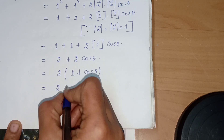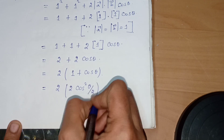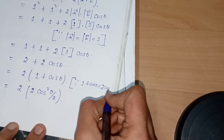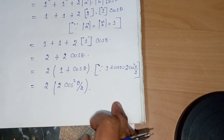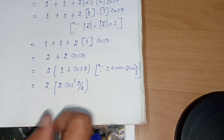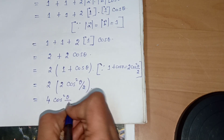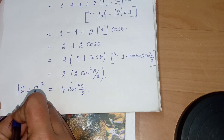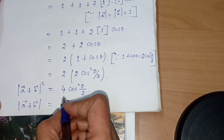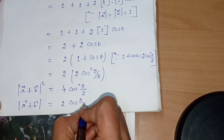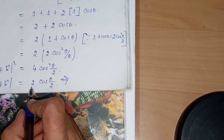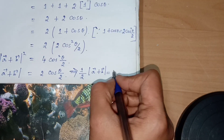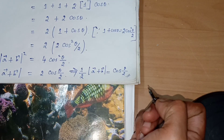Using the formula 1 plus cos θ equals 2 cos²(θ/2), we get 2 plus 2 cos θ equals 4 cos²(θ/2). Taking the square root, |A vector plus B vector| equals 2 cos(θ/2). Multiplying left side by half, half times |A vector plus B vector| equals cos(θ/2). Hence proved.